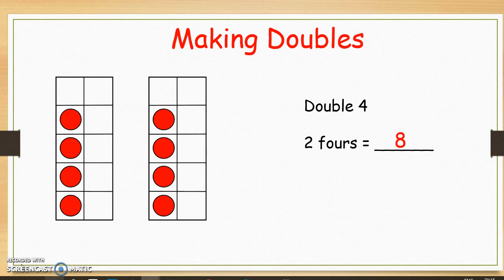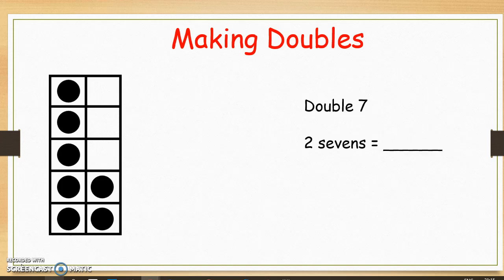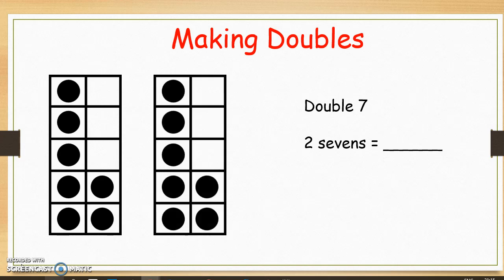Now let's try one more multiplication problem by making doubles. How many dots are on the ten frame? Take a moment to count them. There are seven dots on the ten frame. Now let's work out what double seven is equal to. Double seven means two groups of seven. Can you count and find out what two sevens is equal to? Two sevens equals fourteen.